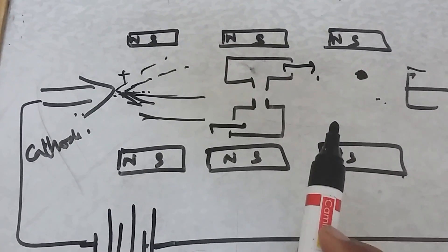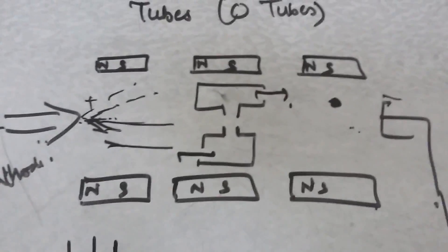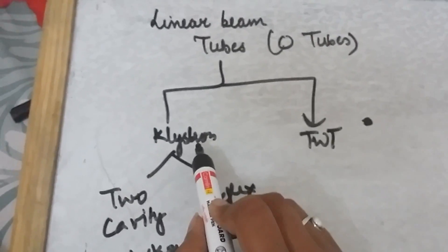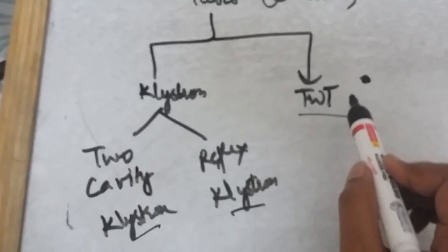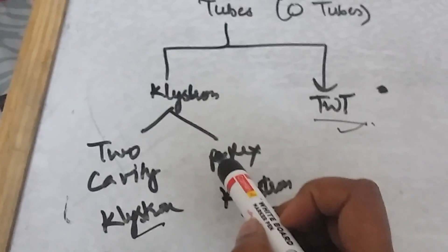Linear beam tubes are categorized into the klystron and the TWT. This klystron is further characterized into two-cavity klystron and reflex klystron. The cross field will cover only magnetron. These are the topics I'm going to cover: two-cavity klystron, reflex klystron, TWT, and magnetron.